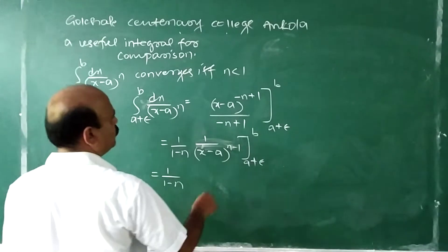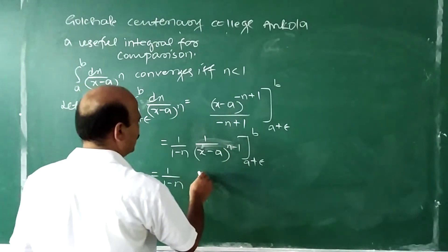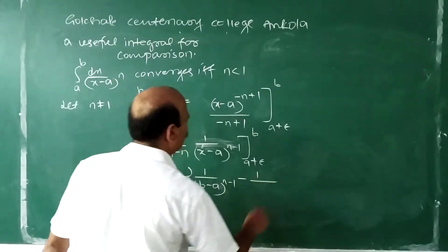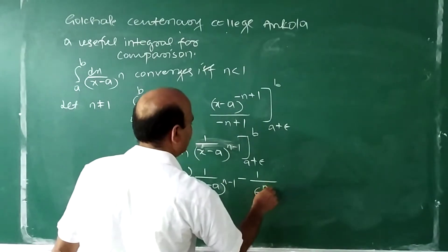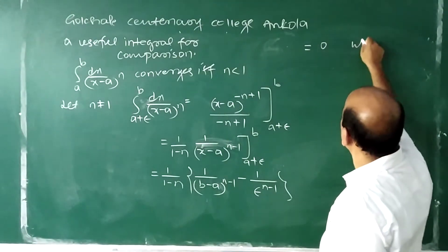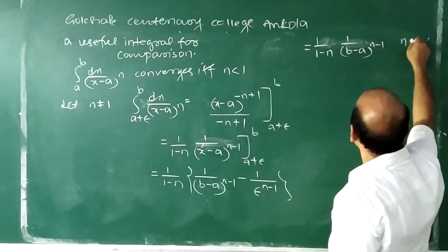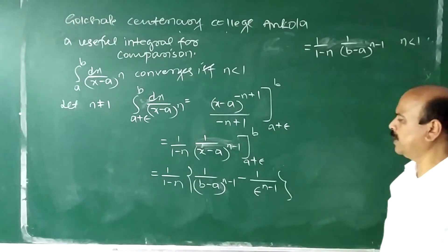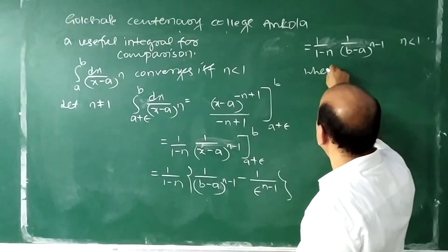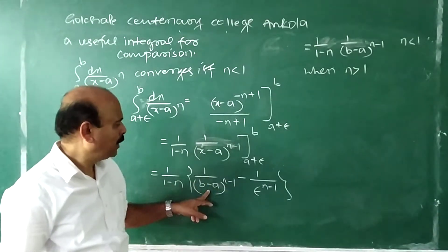So the result is (1/(1−N)) · [1/(B−A)^(N−1) − 1/ε^(N−1)]. When N is less than 1, the exponent (N−1) is negative, so 1/ε^(N−1) goes to the numerator. As ε tends to 0, this term becomes 0, and the expression is independent of ε.